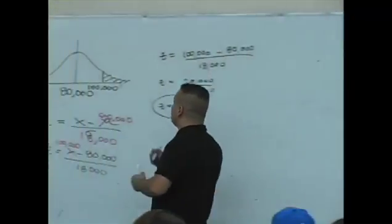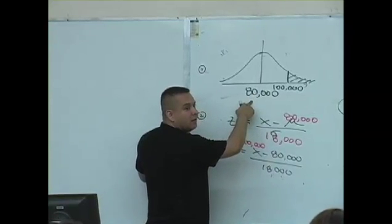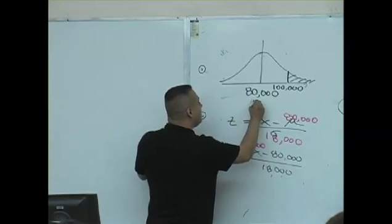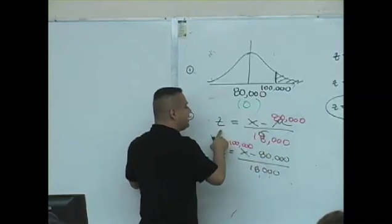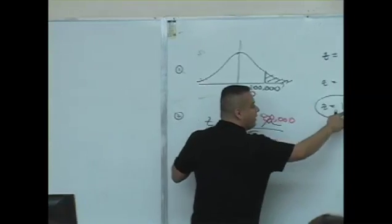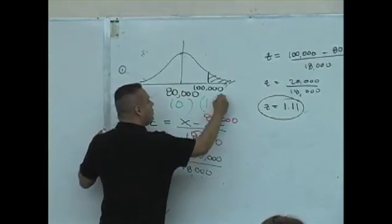Do you guys know for the standard normal distribution, what is the center of that distribution? What is the mean for the standard normal again? Wasn't that zero? Now, what is $100,000 as a standard normal value, as a Z value? What is that $100,000? That's 1.11.